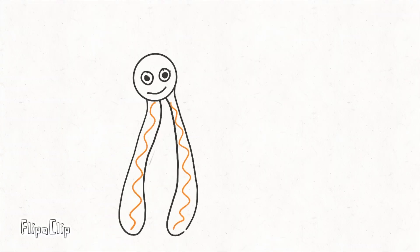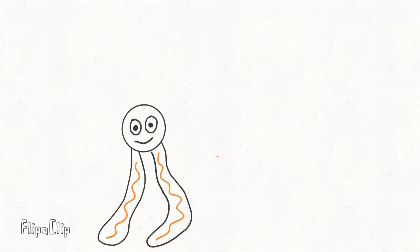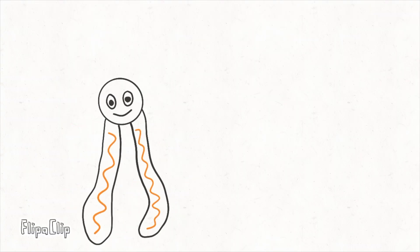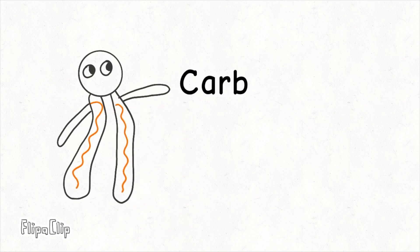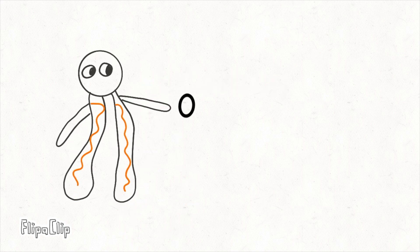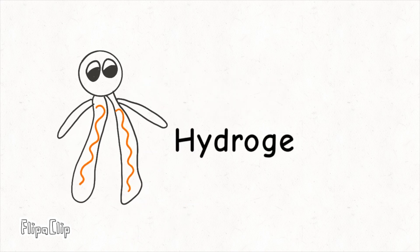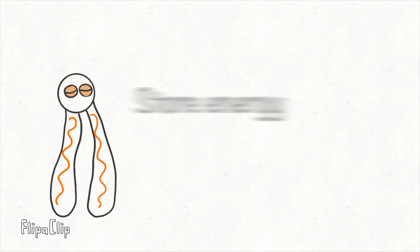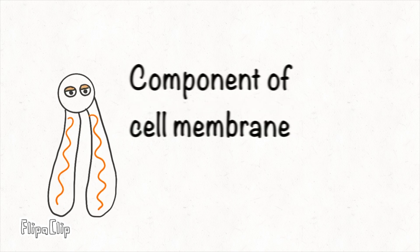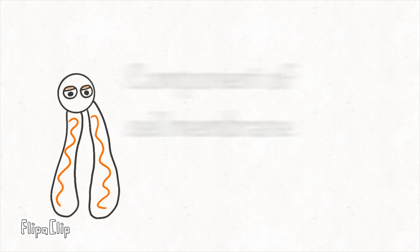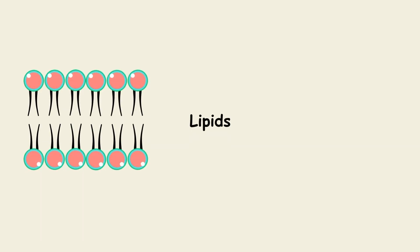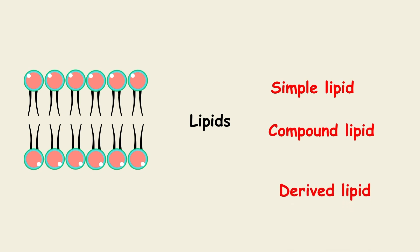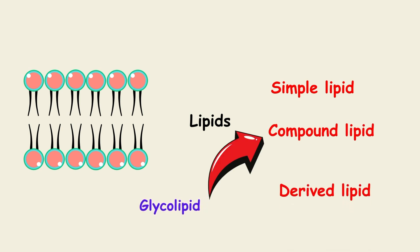Now let us see what are lipids. Lipids are made up of carbon, oxygen and hydrogen. The main function of lipids are to store energy and act as a component of cell membrane. According to structure there are three types of lipid: simple lipid, compound lipid and derived lipid.